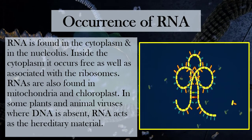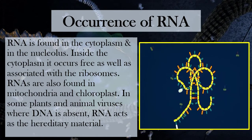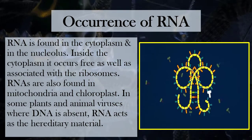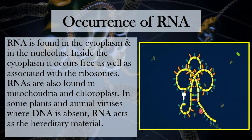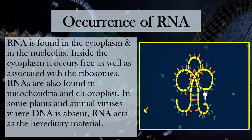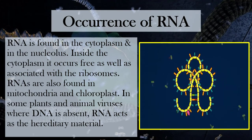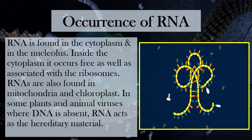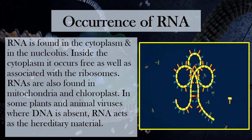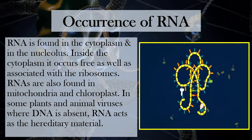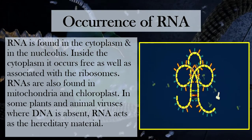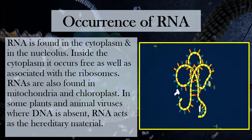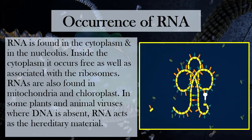First of all, where is RNA found in the cell? It is found in the cytoplasm, in the nucleolus. Cytoplasm is found in the cells and RNA is associated with the ribosomes. It is also found in mitochondria and chloroplasts.